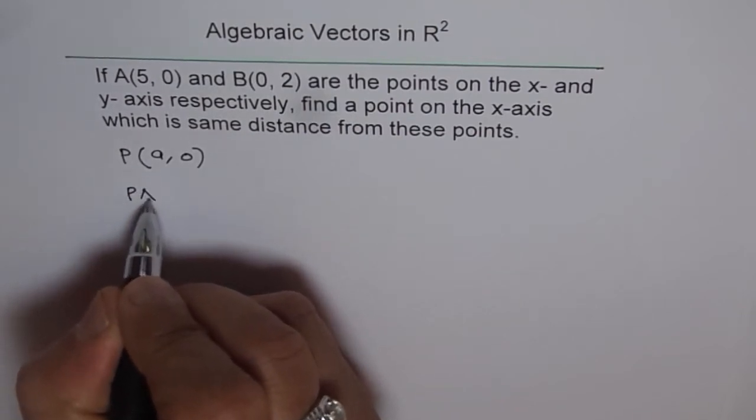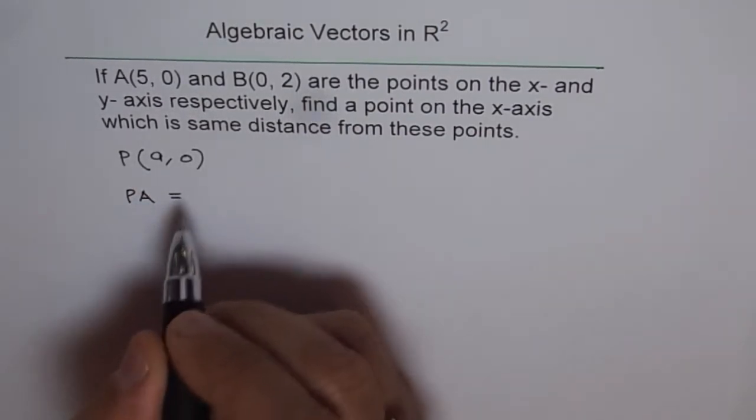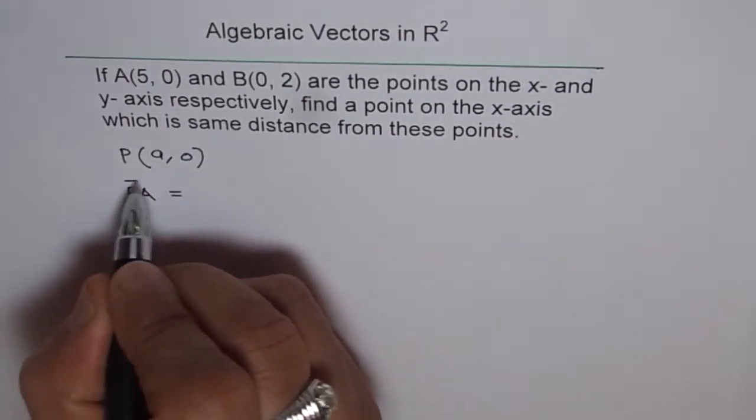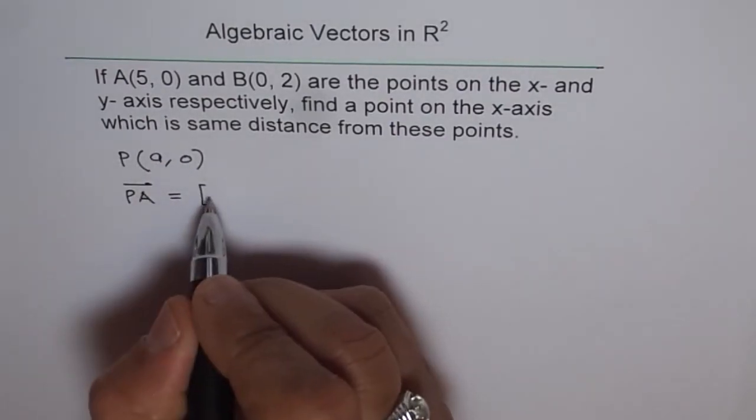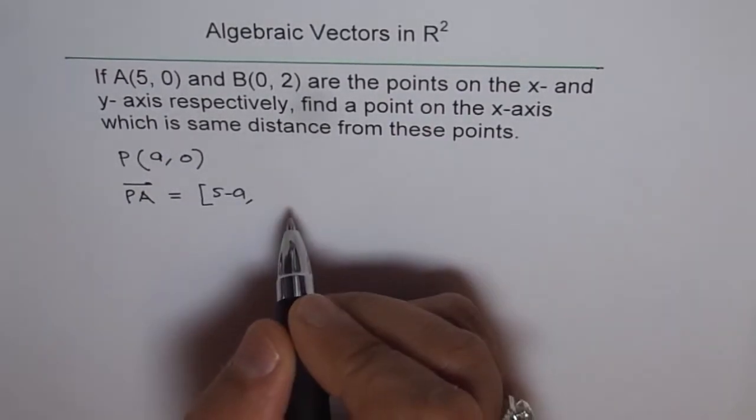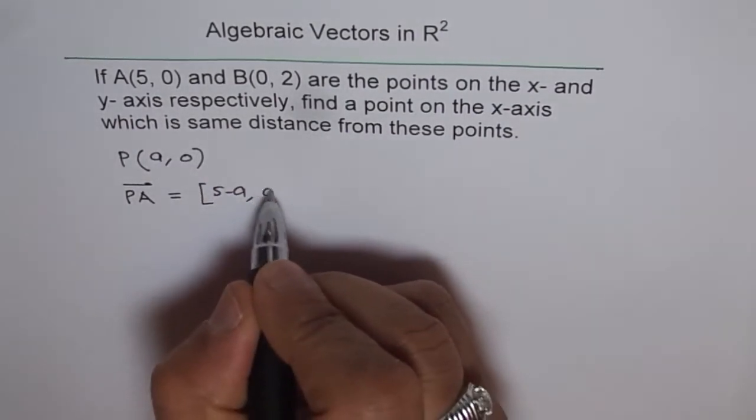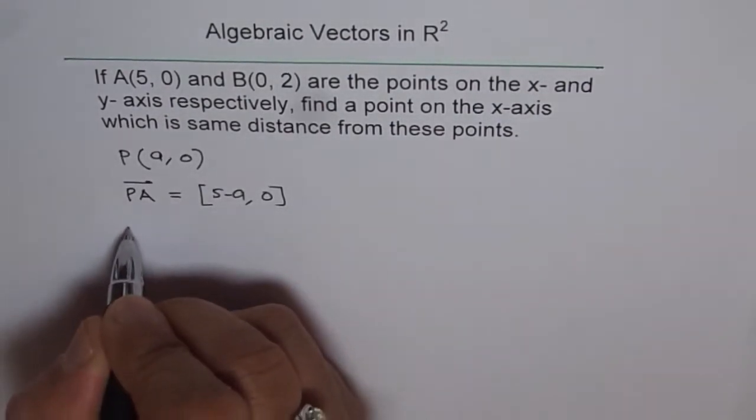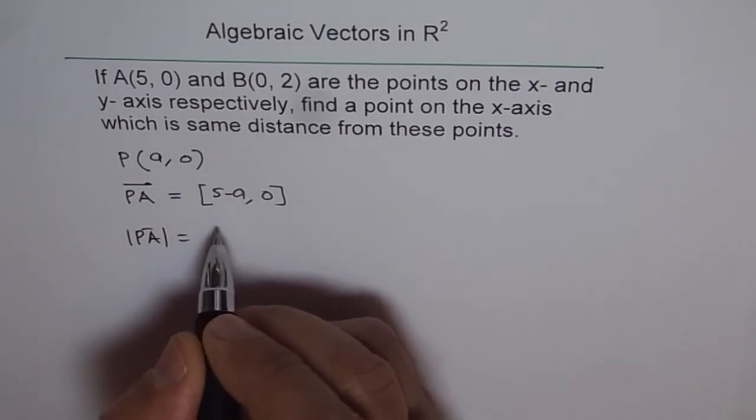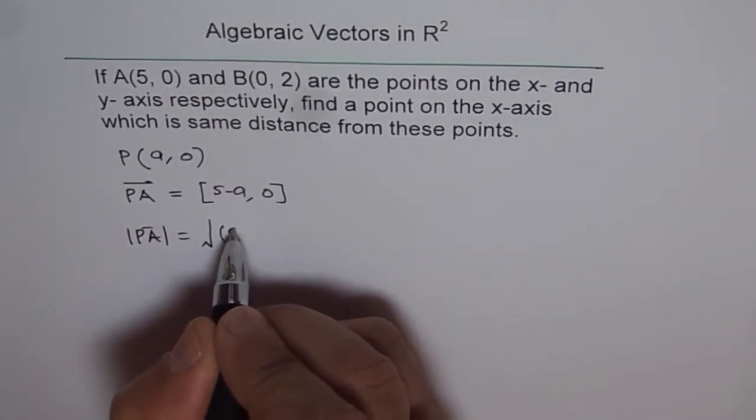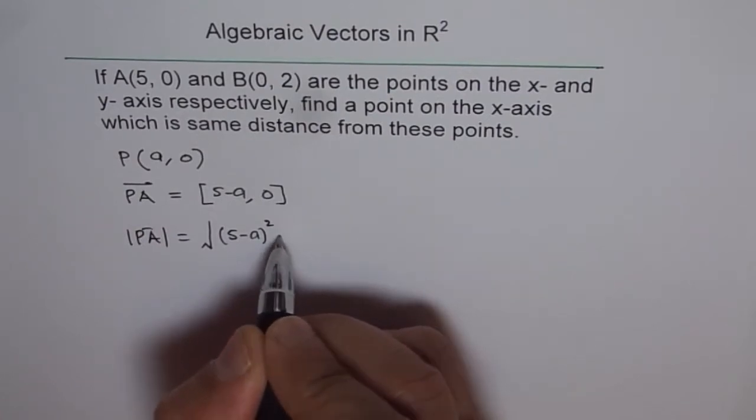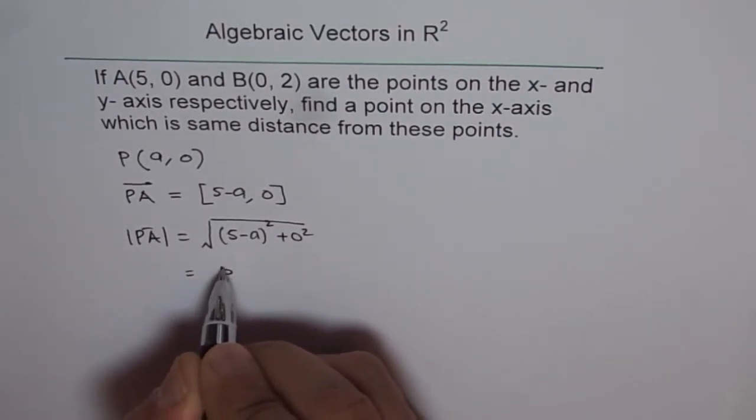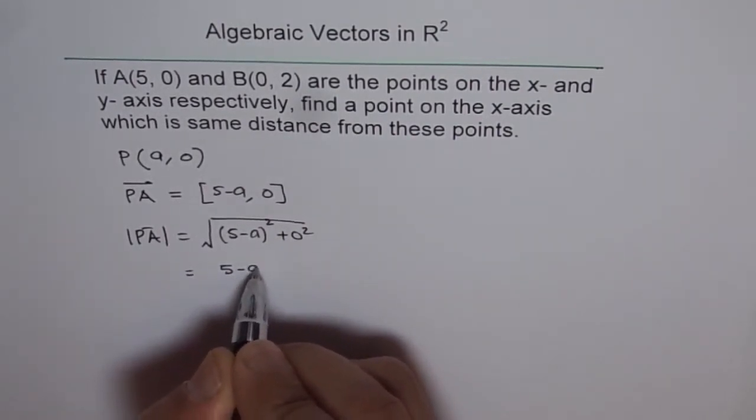So what is PA equals to? PA equals to [5-A, 0]. Let's use vectors. 5 minus A which is the X component and the Y value is 0 minus 0. Now what is the magnitude of PA? Magnitude of PA will be equal to square root of (5-A)² plus 0², which is equal to (5-A).